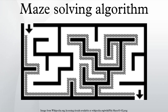Wall Follower: The wall follower, the best known rule for traversing mazes, is also known as either the left hand rule or the right hand rule. If the maze is simply connected, that is, all its walls are connected together or to the maze's outer boundary,